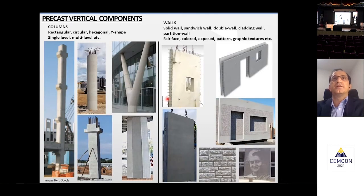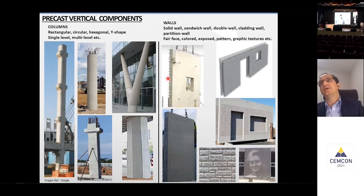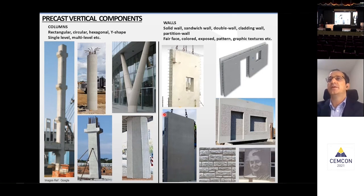After the floor components, another thing we can do in precast are the vertical components — columns — which can be rectangular, circular, hexagonal, Y-shaped, single level, or multi-level. We can make them precast and take them to site for connections. Walls also can be done in precast. There is a variety of walls — we have solid walls, and sandwich walls where there is a layer of insulation in between, giving thermal efficiency to the building.